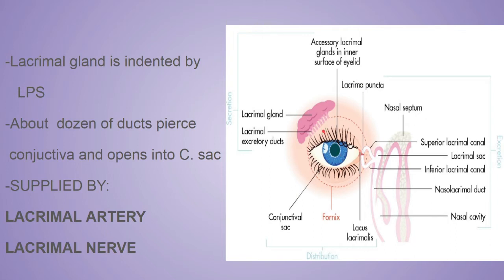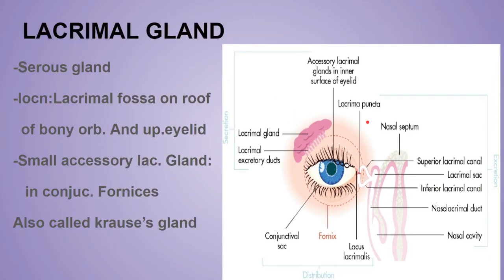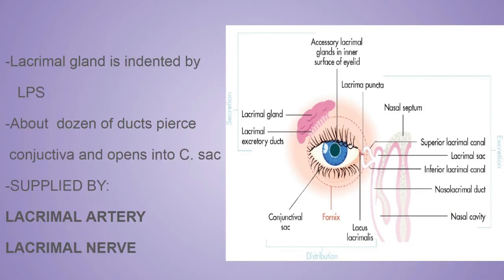The lacrimal gland is J-shaped and has mainly two parts: the orbital part, which is present on the roof of the bony orbit, and the palpebral part, which is on the upper eyelid.